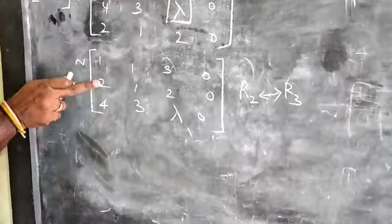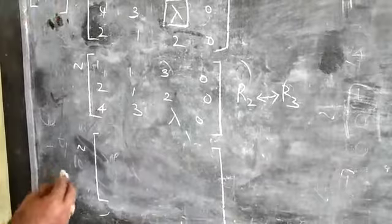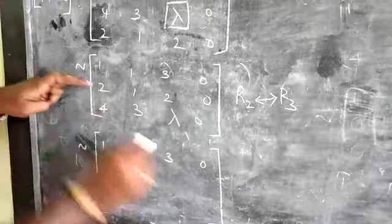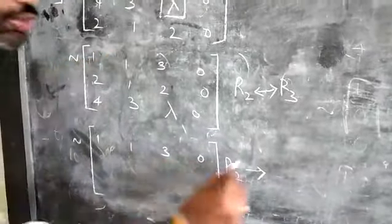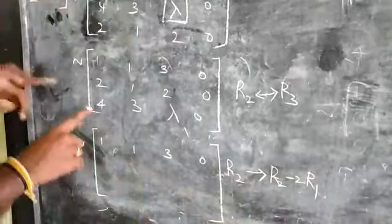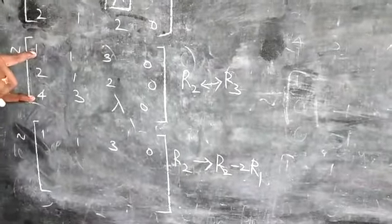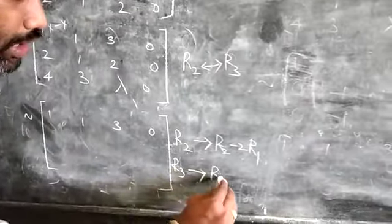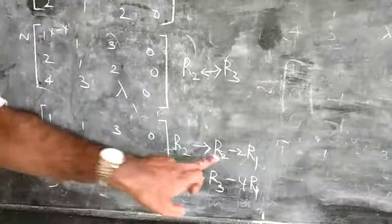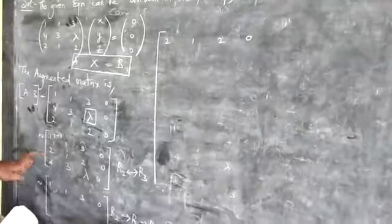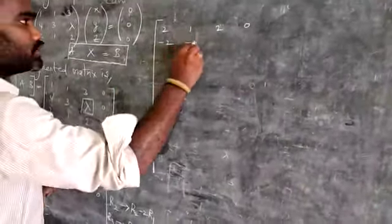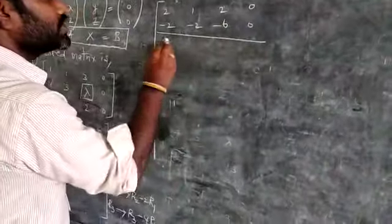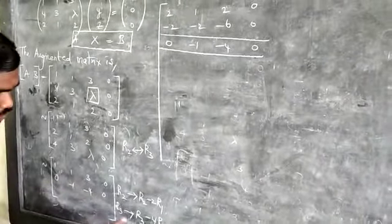After swapping R2 and R3, the matrix becomes: R1 is 1, 1, 3, 0; R2 is 2, 1, 2, 0; R3 is 4, 3, lambda, 0. Now we want to make the first column elements in R2 and R3 equal to zero. R1 stays unchanged: 1, 1, 3, 0. For R2, apply R2 → R2 − 2R1: multiply R1 by −2 giving −2, −2, −6, 0; then 2−2=0, 1−2=−1, 2−6=−4, 0. So R2 is 0, −1, −4, 0.